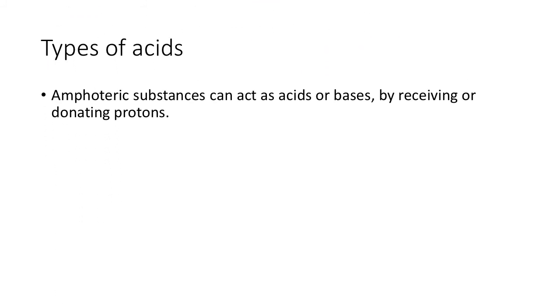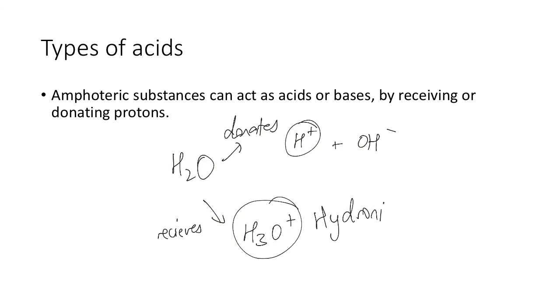And then amphoteric substances, which have the ability to act as acids or bases by receiving or donating protons. So an amphoteric substance is an example of water. If it donates a proton, it'll be that proton there and the OH-. So that hydrogen is donated away and it's only left with the OH-. But if it receives a proton, it ends up being H3O+. So it has the ability to donate or receive a proton and turn into either OH- or H3O+. This H3O+ has a name. It's called the hydronium ion.